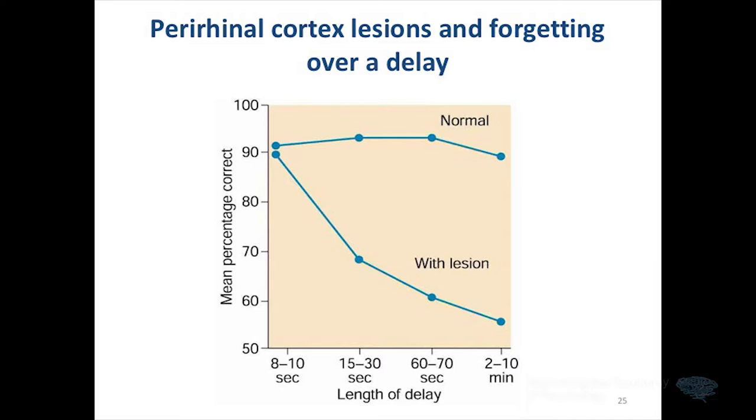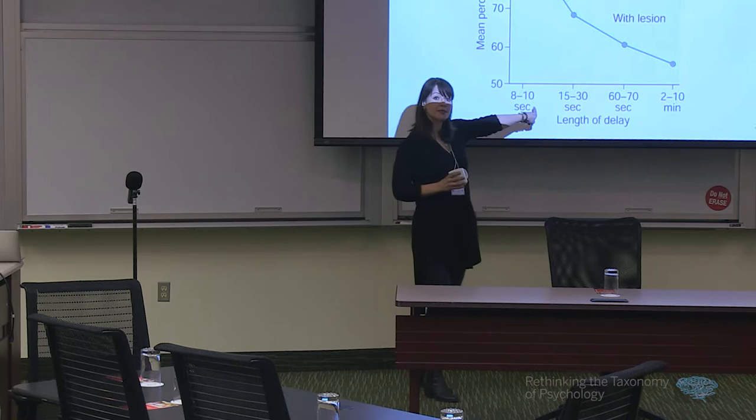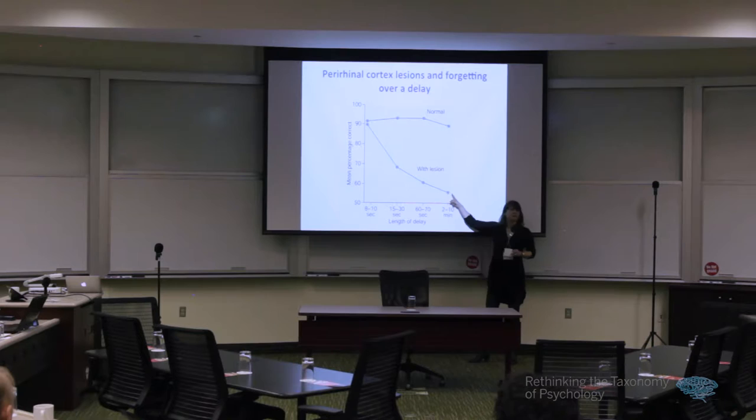The very well-established effect in the literature is that if you damage perirhinal cortex, an animal will do well on this task at very short delays of a few seconds. But as you increase the delay, an animal with perirhinal cortex damage will start to really bottom out. In the animal literature there's a perspective that perirhinal cortex actually operates almost as a module for object recognition memory, because this effect has been shown so many times and it's so clear-cut. It's true that perirhinal cortex is critical for recognition memory in this case.